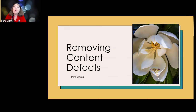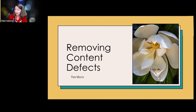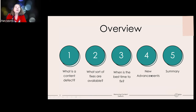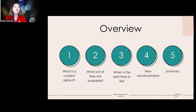This is the first session for this year where we're going to look at each of the areas of knowledge you identified as missing in your photographic experience. The first thing you all highlighted was removing content defects. So what do we mean by this? A content defect is not an exposure defect - it's something in the pixels of your image that you consider to be not quite right. We'll look at what sort of fixes are available and when is the best time to fix it.